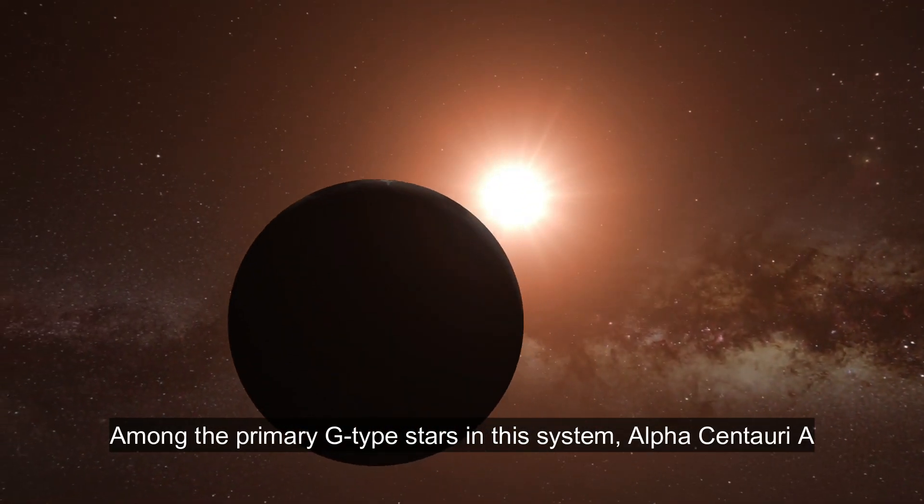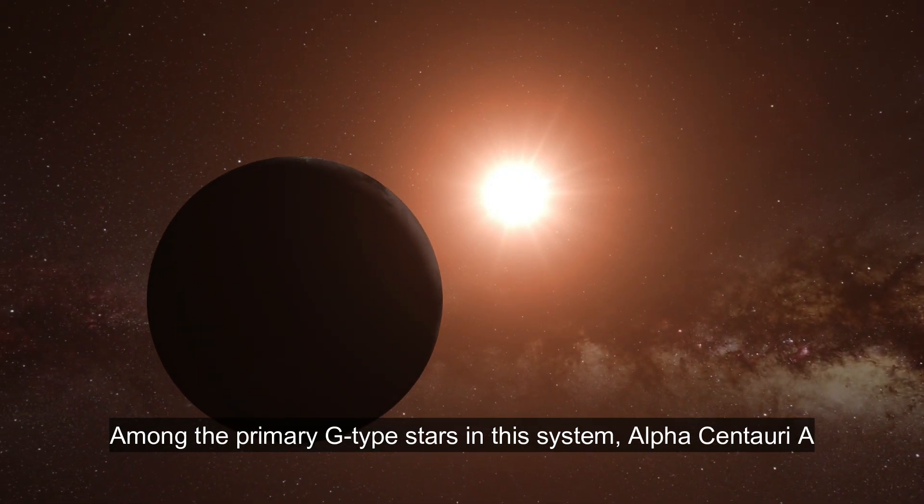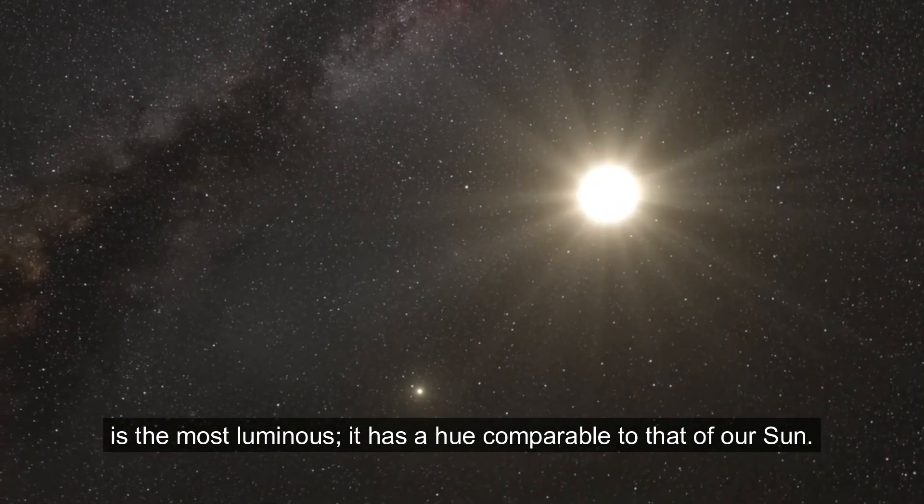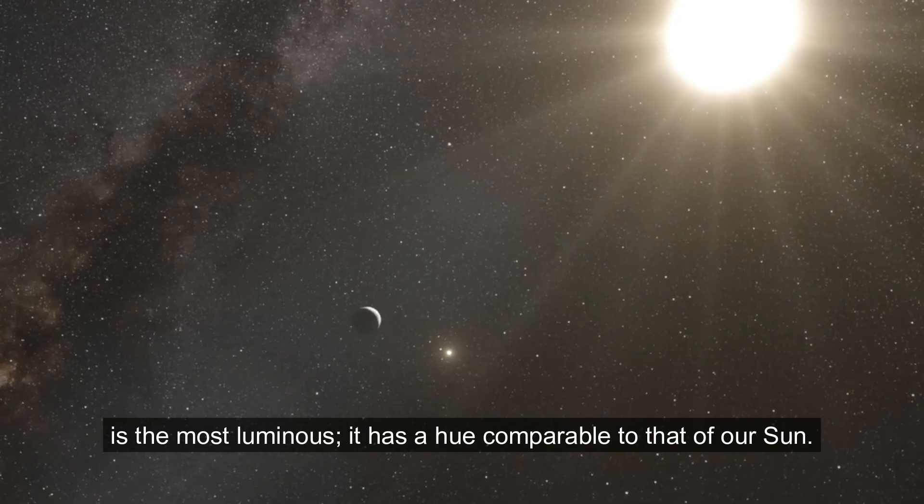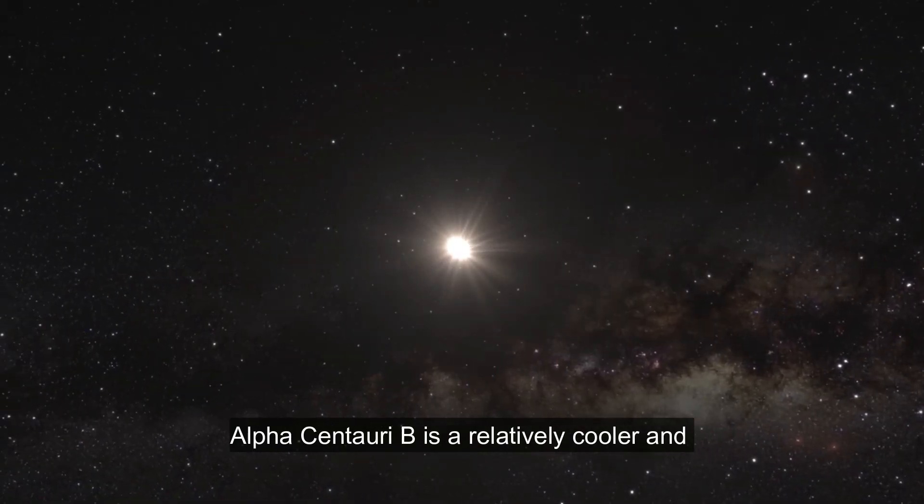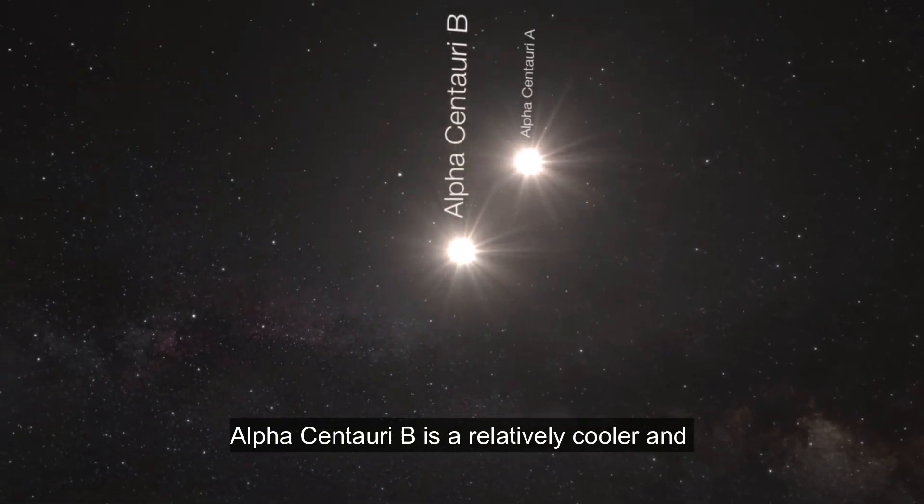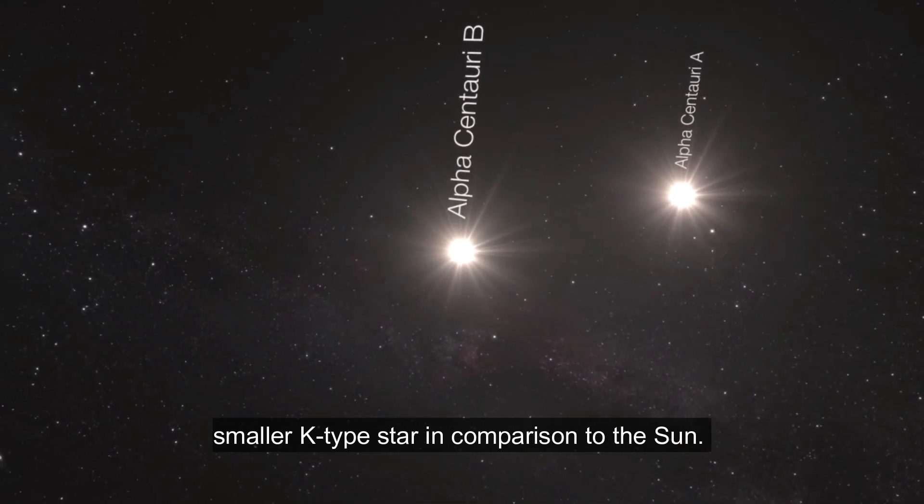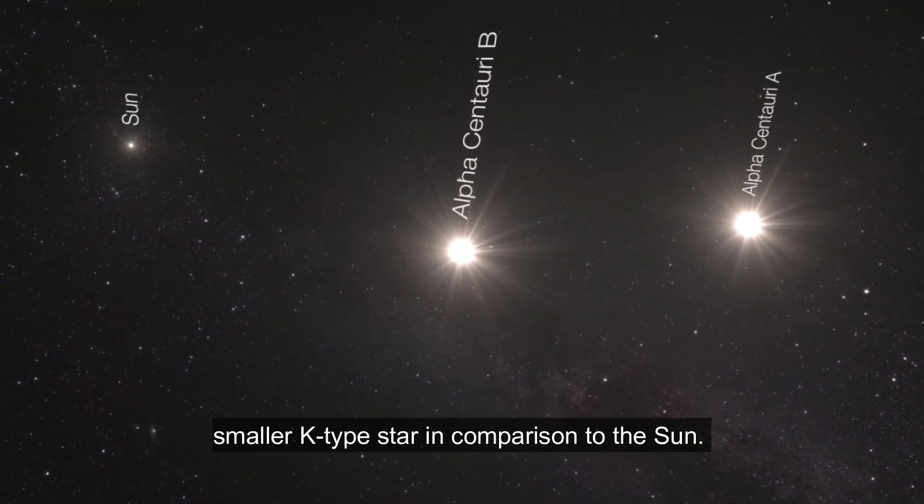Among the primary G-type stars in this system, Alpha Centauri A is the most luminous. It has a hue comparable to that of our Sun. Alpha Centauri B is a relatively cooler and smaller K-type star in comparison to the Sun.